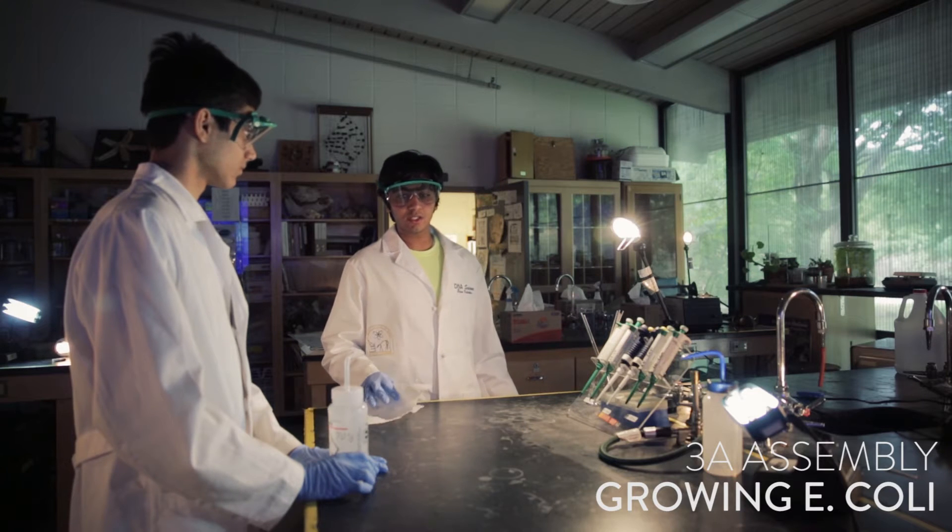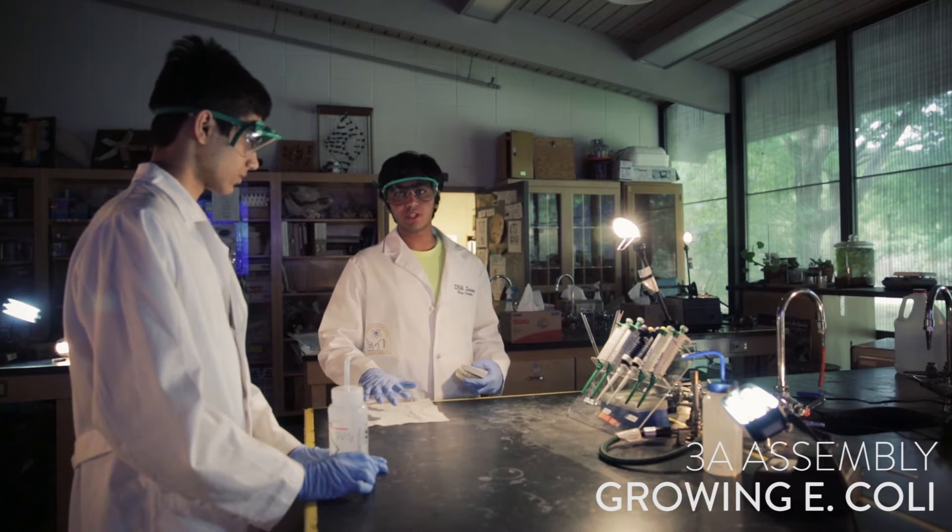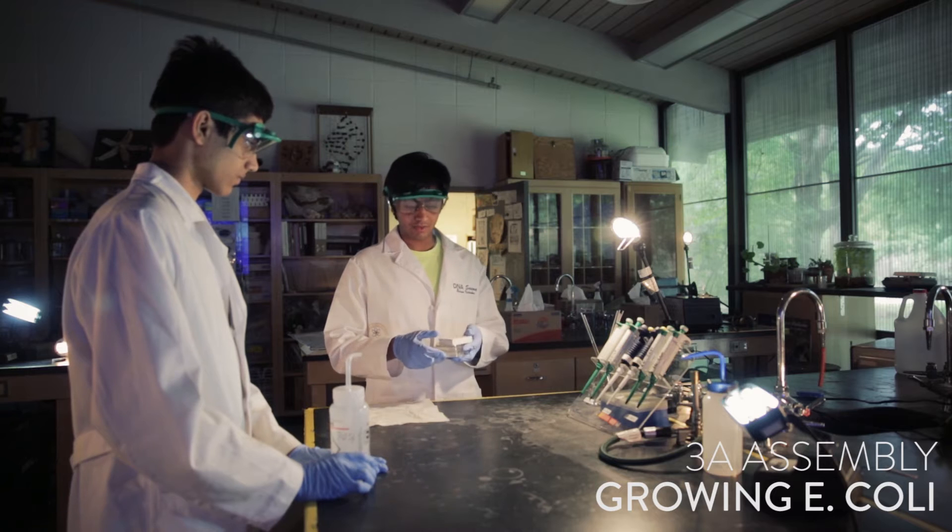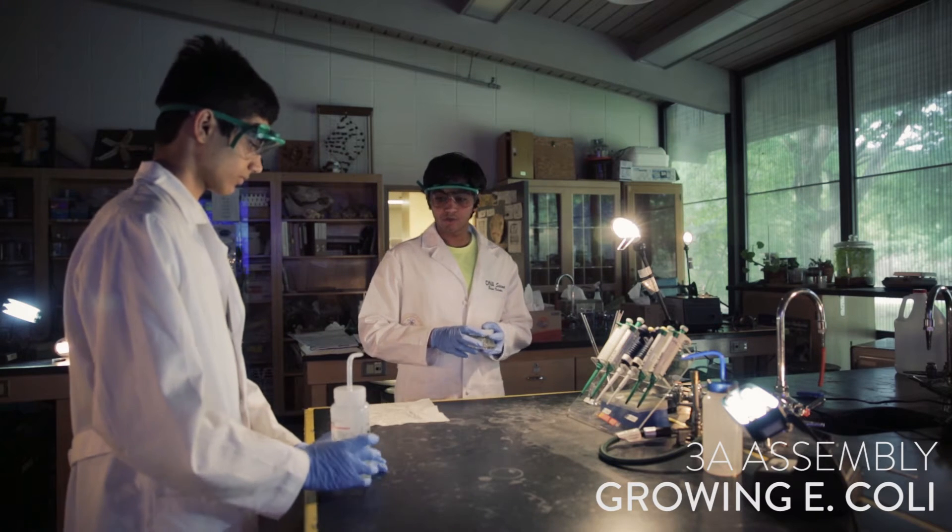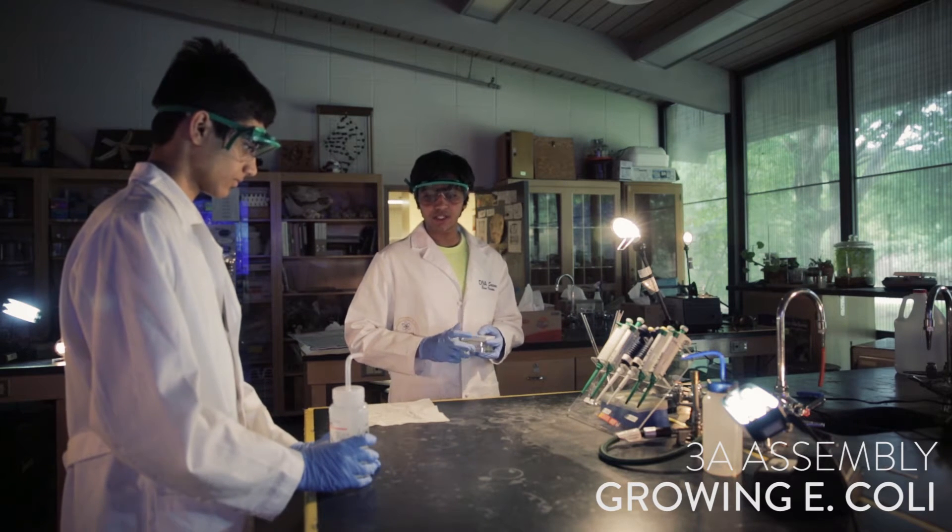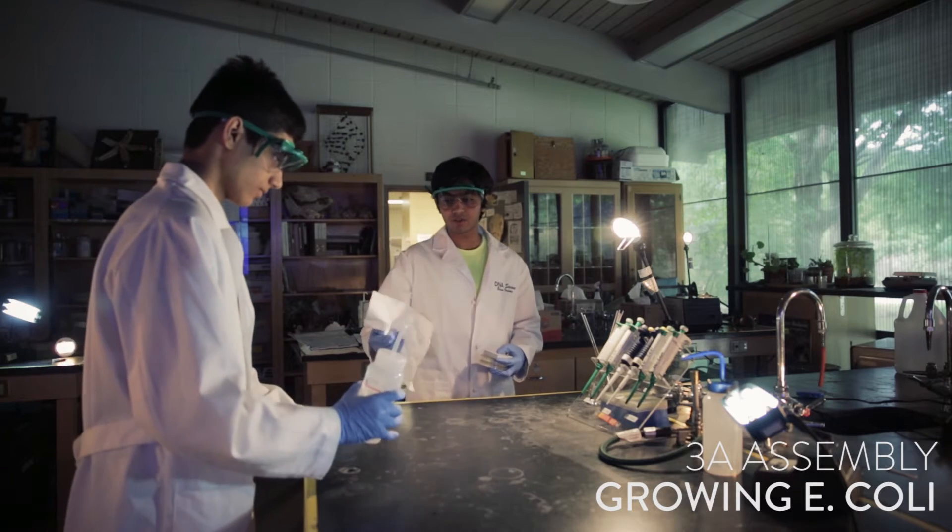So today we're going to do a streak. We're going to streak bacterial plates with bacteria that we have right here. First thing we need to do is sterilize the table with ethanol, 70% ethanol right here.